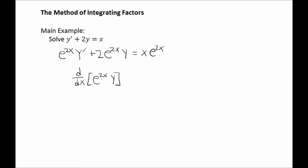We'd have the first function, e to the 2x, times the derivative of the second function, giving us y prime. And we add to that the derivative of the first function, which the chain rule tells us will be 2e to the 2x, times the second function, y. So we were able to reverse the product rule after we multiplied both sides of the equation by e to the 2x. The right side of the equation is now x times e to the 2x.